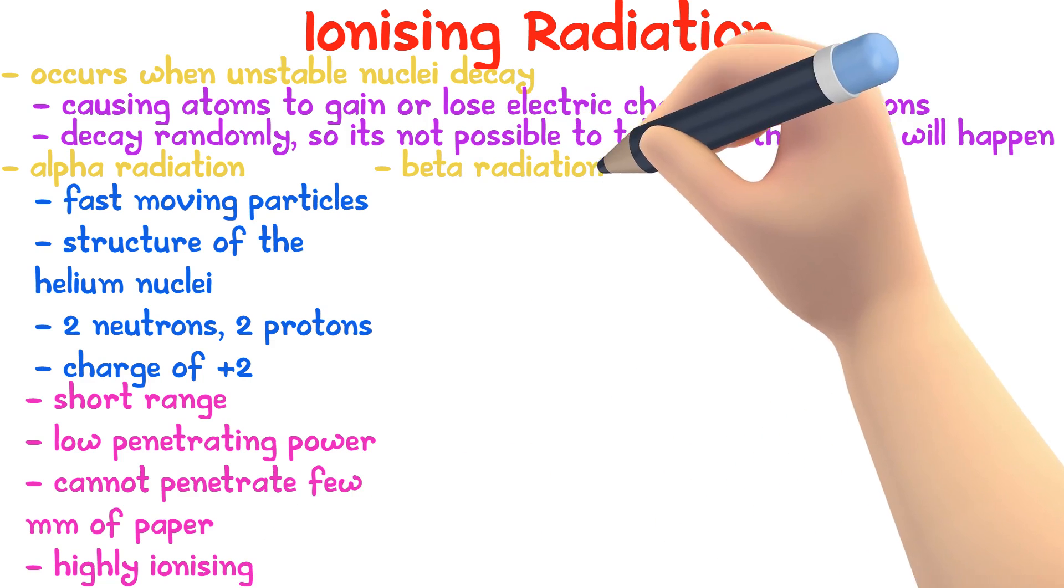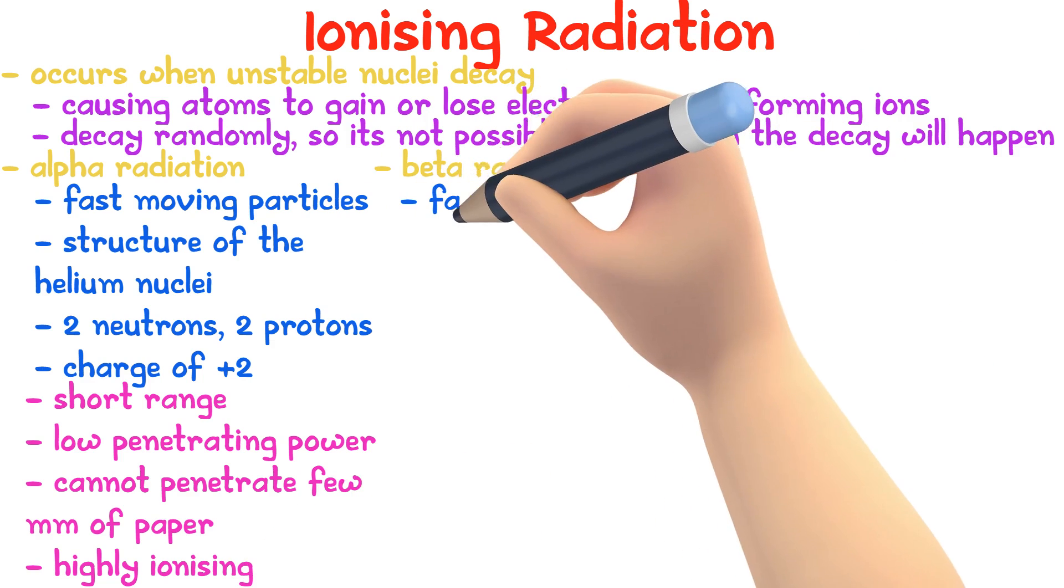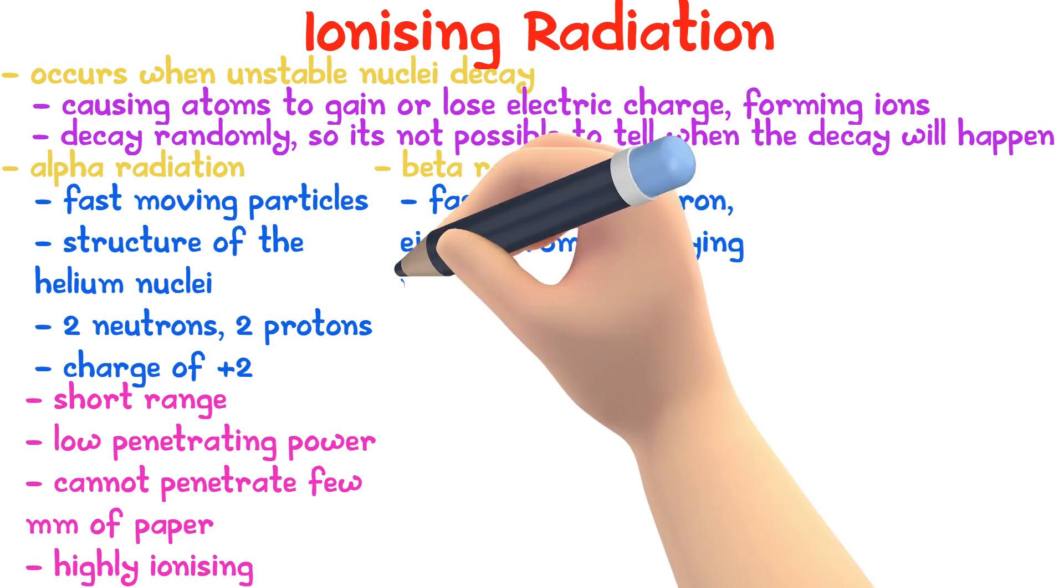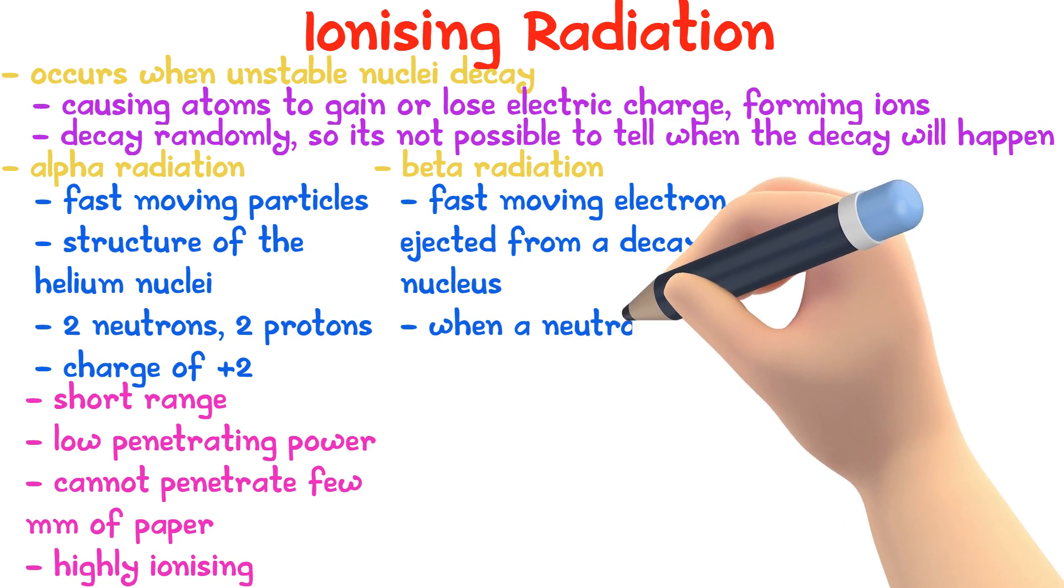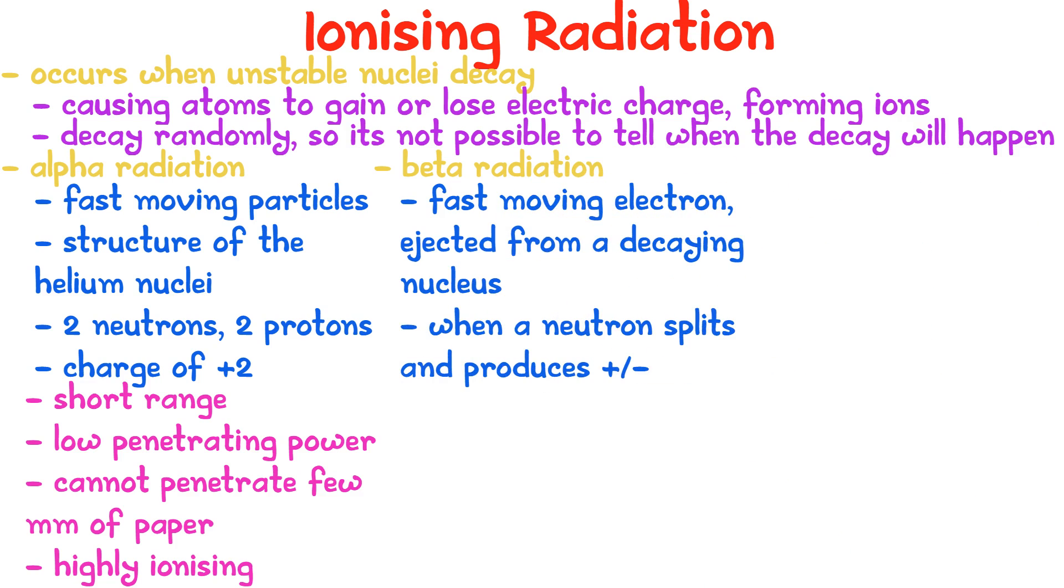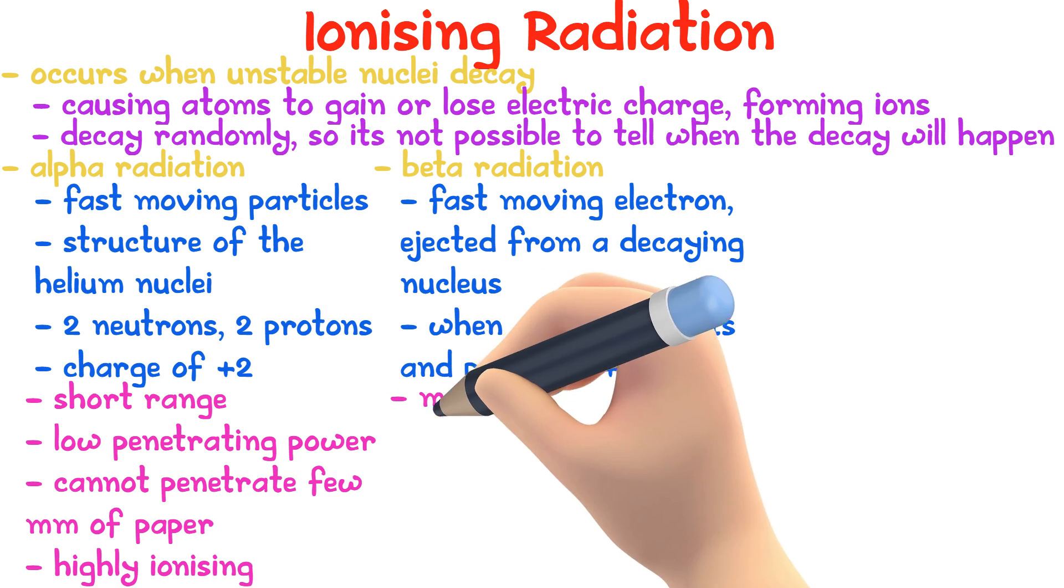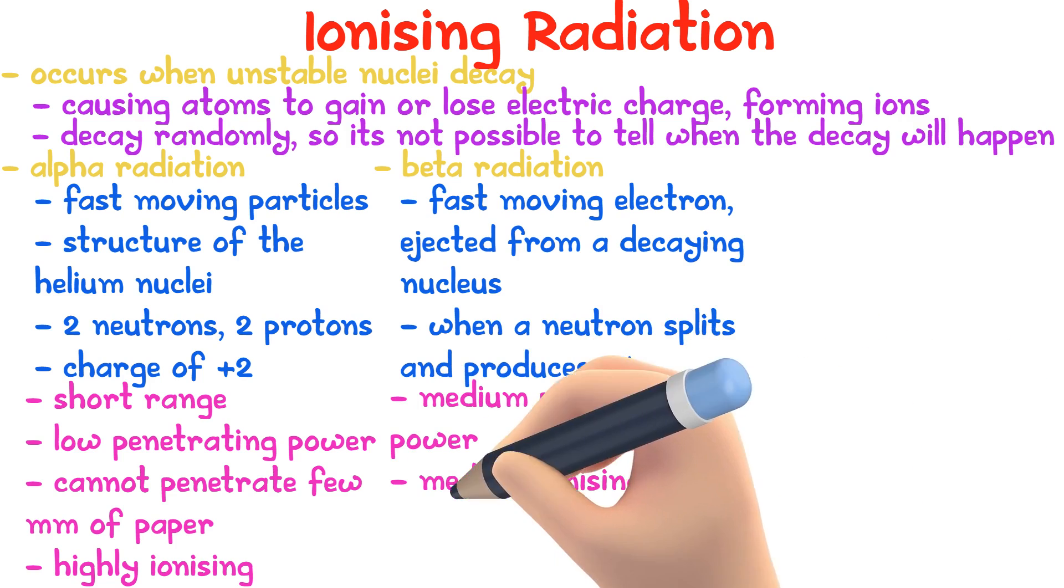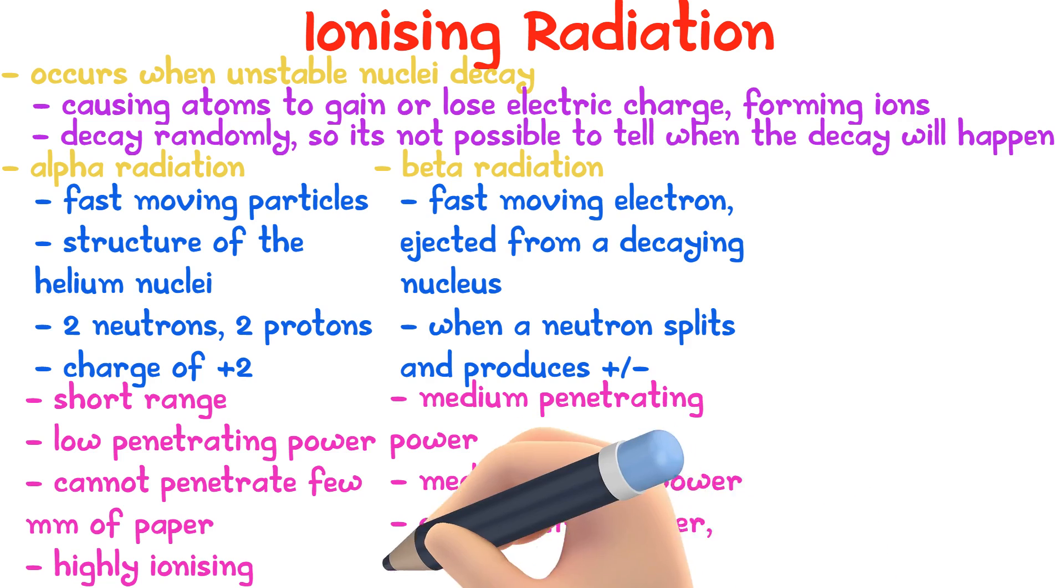Beta radiation. Beta particles are fast moving electrons, ejected by a decaying nucleus. This occurs when a neutron splits into a proton and an electron. The proton remains in the nucleus while the electron is ejected. A few features they have: medium ionizing power, medium penetrating power, can penetrate paper but not thin aluminum.